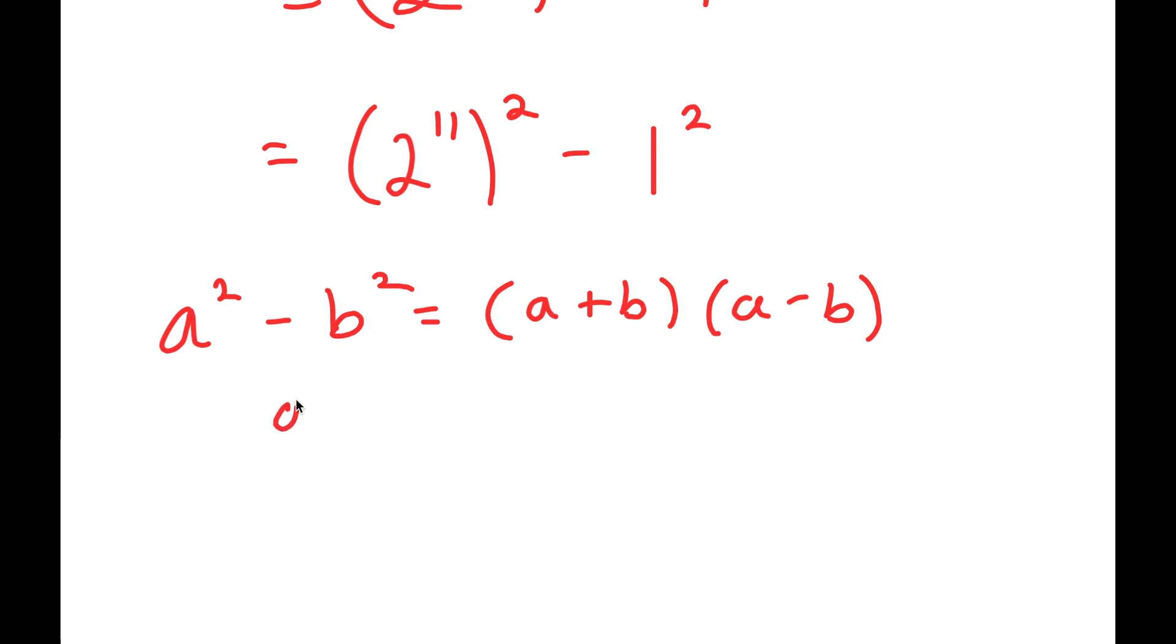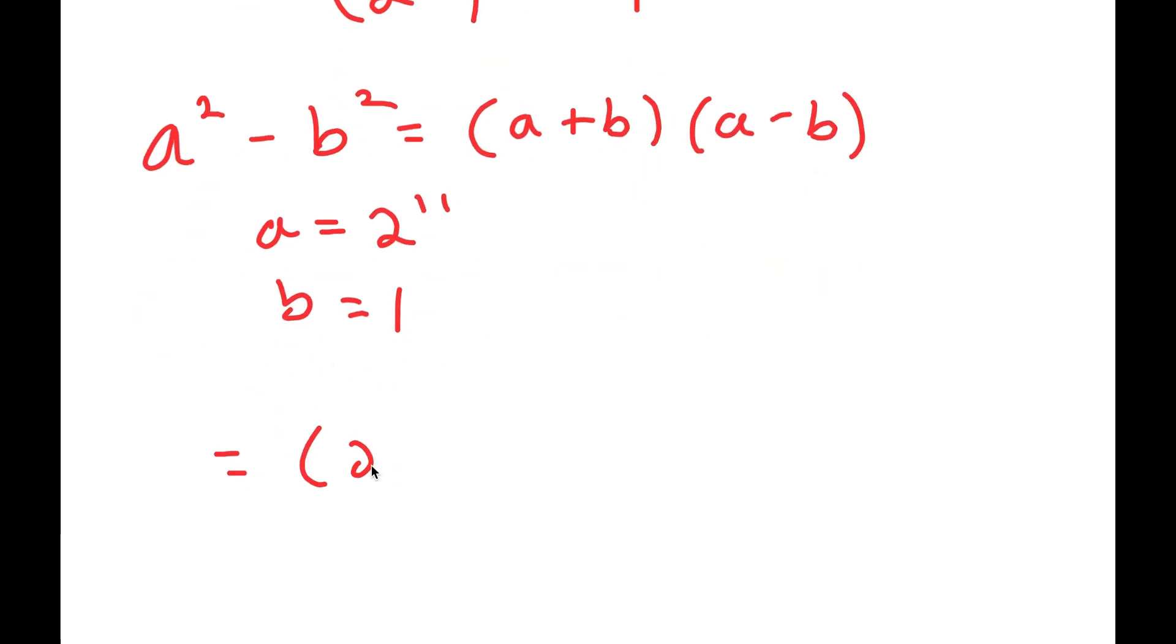So, just to clarify, a is 2 to the power of 11 and b is 1. So, now I get 2 to the power of 11 plus 1 times 2 to the power of 11 minus 1.